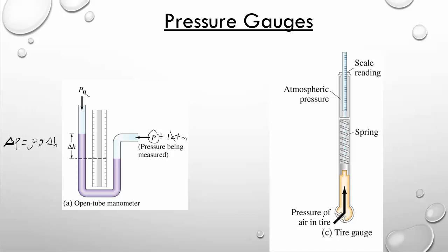Probably a pressure device you've seen more often is the one you keep in your glove box to measure tire pressure. The tire valve goes in here, and these gauges are spring-loaded — they don't actually use fluids. The air exerts a pressure, the spring is calibrated to compress by the right amount for the given pressure, and then a stick extends out so you can read the pressure. We're not going to do much with these, but now you know how they work.